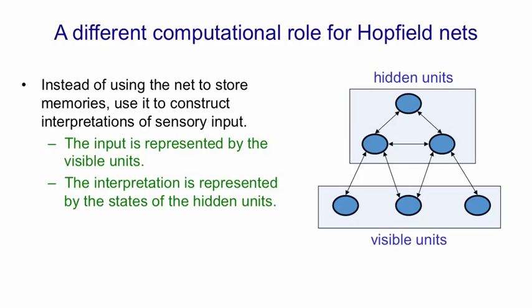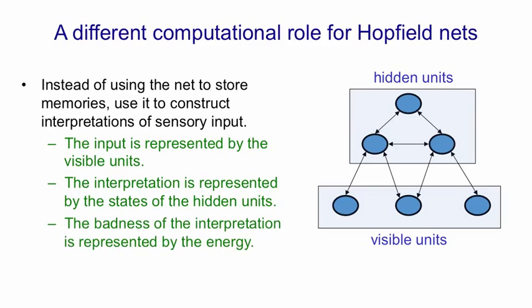So the interpretation or explanation of the input is going to be a binary configuration over the hidden units. The energy of the whole system will represent the badness of that interpretation. So to get good interpretations according to our current model of the world, which is in the energy function, we need to find low energy states of the hidden units given the input represented by the visible units.